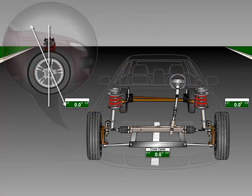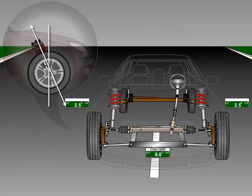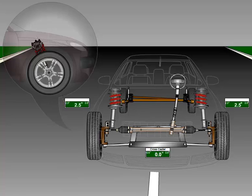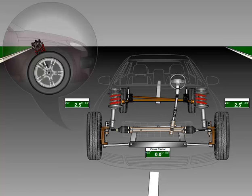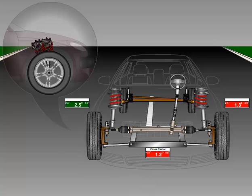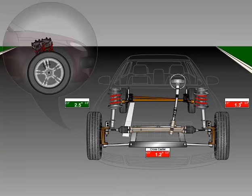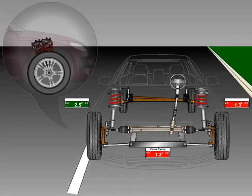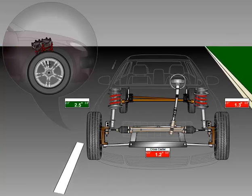The caster angle is the angle between vertical and the steering pivot axis. Caster can be adjusted by moving the top of the struts forward or rearward. Caster angles that are out of adjustment usually won't cause the tyres to wear, but may cause the vehicle to pull if caster angles differ greatly between the two front wheels. Caster can also affect the steering effort.